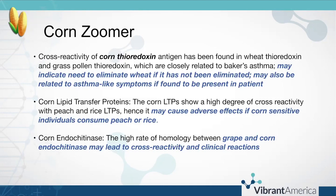If the patients don't have asthma-like symptoms, corn thioredoxin may not be of concern. Corn lipid transfer proteins have a high degree of cross reactivity with peaches and rice, so going corn free may not be enough — peaches or rice may actually stimulate similar symptoms. Corn endochitinase has a high rate of homology with grapes and may lead to cross reactivity and clinical reactions. When an individual goes corn free after testing positive for antibodies to corn endochitinase, consuming grapes may produce similar symptoms because the protein structures are the same or similar.